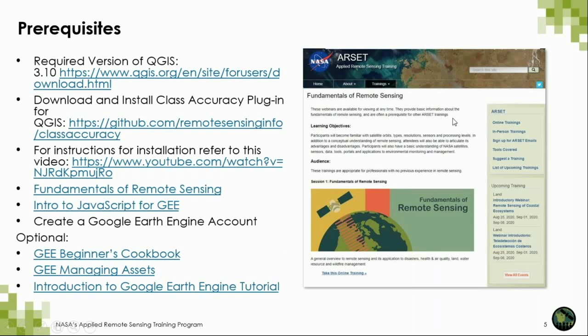We have listed on the RSET website a few prerequisites for this course. First, we will be needing a version of QGIS, specifically version 3.10, which is available through this link. You will also need to download and install the class accuracy plugin for QGIS, which we'll be using to run an accuracy assessment later in this workshop. For instructions on installation, we've provided a link to a video as well as additional information on the RSET page for this webinar.